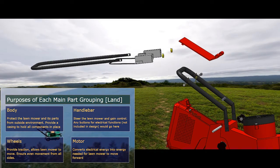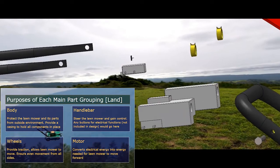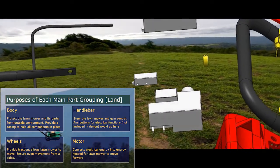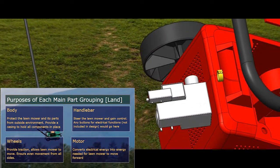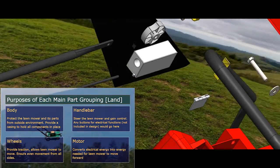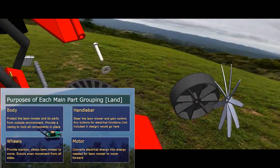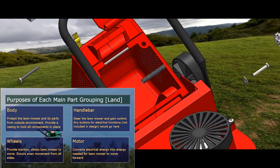In addition, you have the handlebar, which steers the lawnmower and helps you gain control. The little blocks that you see here are all the different types of electronics that are used to turn on and off the controls of the lawnmower. All of the buttons which control the electrical functions, including things like adjusting the height at which the grass is cut, and adjusting the speed of the blade, would all be put here.